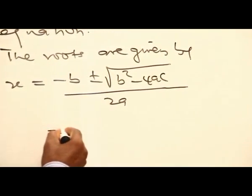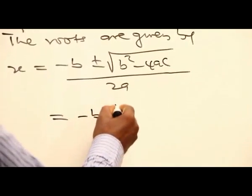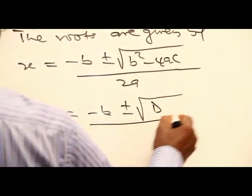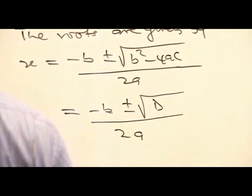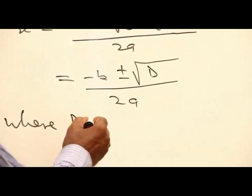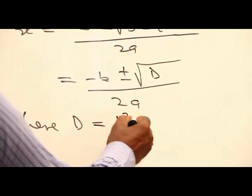Or in this form, it is the same as negative b plus or minus the square root of D, all over 2a, where D is equal to b squared minus 4ac.